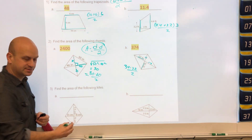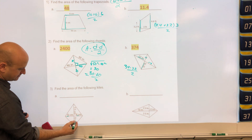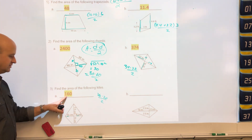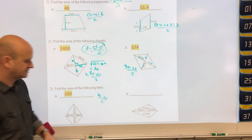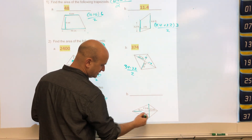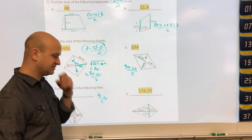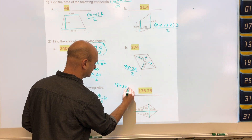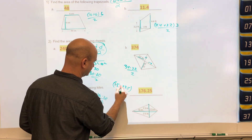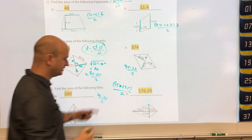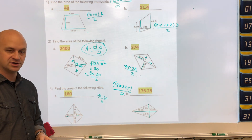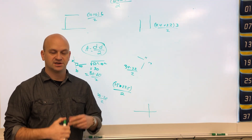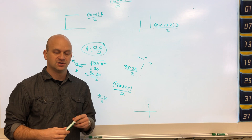For kites, we use the same diagonal area formula. Here, 8 plus 8 is 16 times 20 divided by 2 gives an area of 160. For the next kite, 15 times 23.5 divided by 2 gives an area of 176. Keep in mind how you would handle graphing points, which will be covered another time.